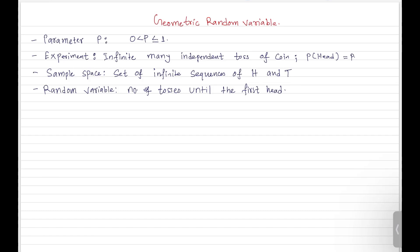Hello everyone, welcome. Let's look at one more discrete random variable — the geometric random variable — and this will be our last discrete random variable. Next video onwards we will be looking at operations on single random variables like finding their expectation, variance, and all these things. So let's look at this geometric random variable.